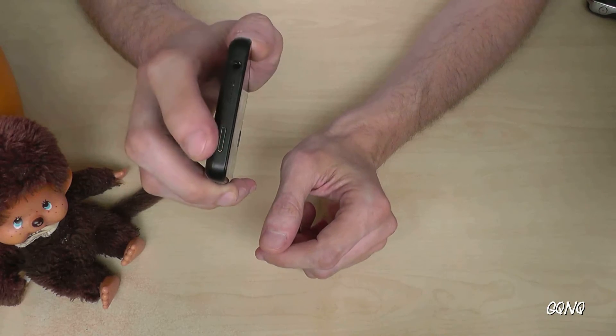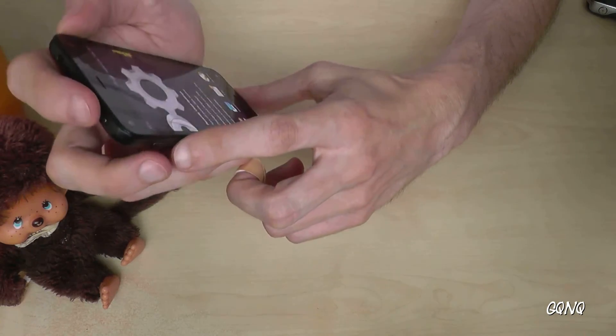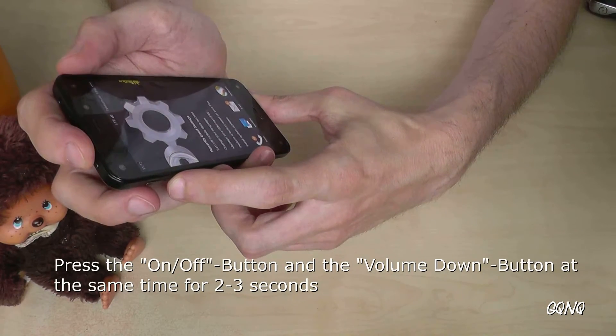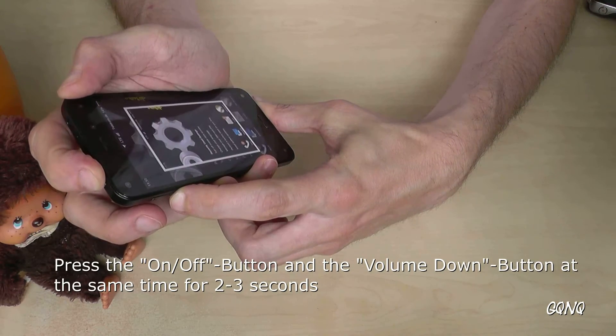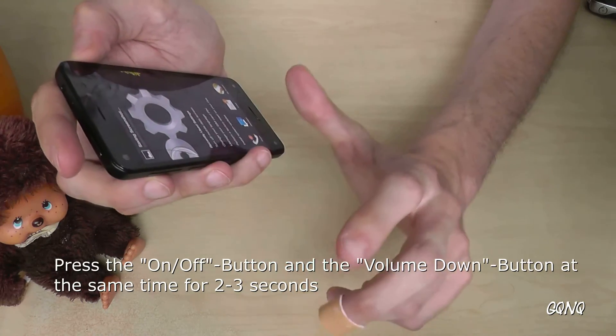We just need the power button up there and the volume down button. So you press it at the same time for two or three seconds and you see the screenshot is made. It is very easy.